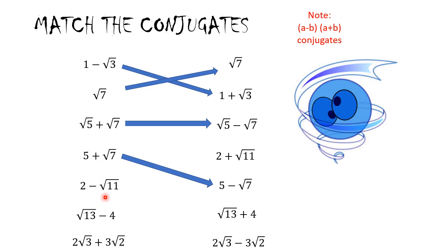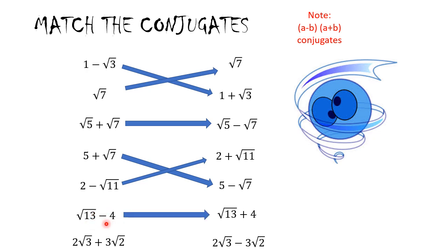For (5 + radical 7) we search for 5 and radical 7 with a minus sign instead. For (2 − radical 11) we just flip the sign: its conjugate is (2 + radical 11). For (radical 13 − 4) the conjugate is (radical 13 + 4). Finally for (2 radical 3 + radical 2) we flip only the middle sign to get the conjugate.